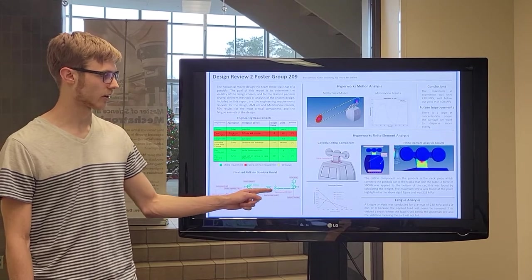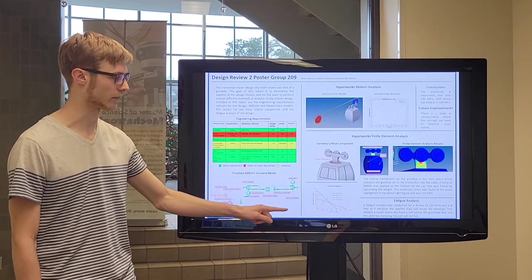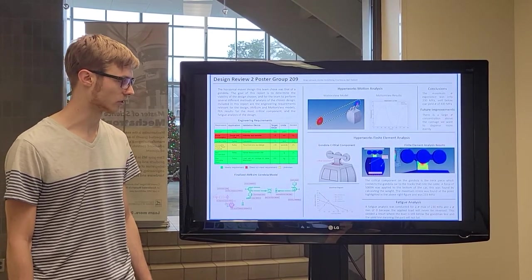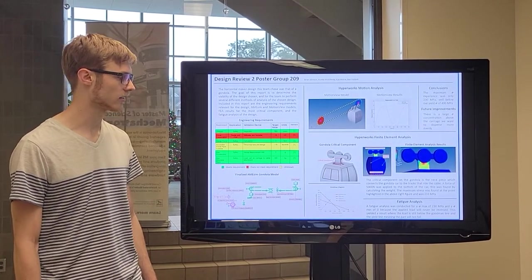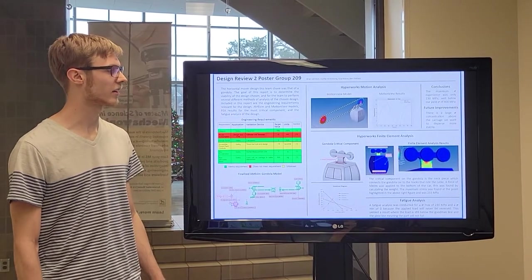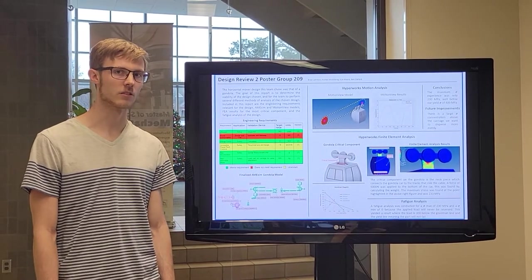All of these parameters created this Goodman diagram, where you can see the load line is below both the Goodman line and the yield line, meaning that the element will not fail due to fatigue.